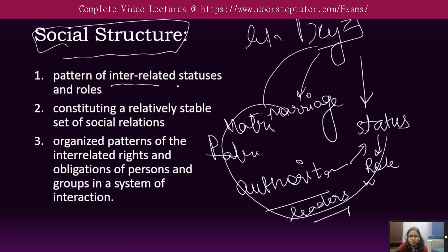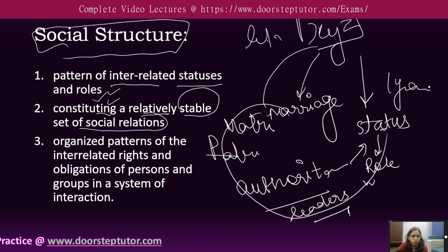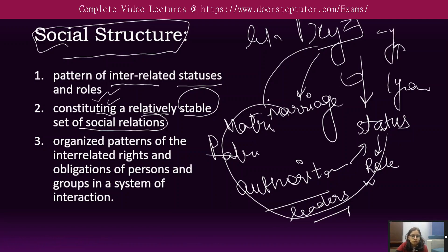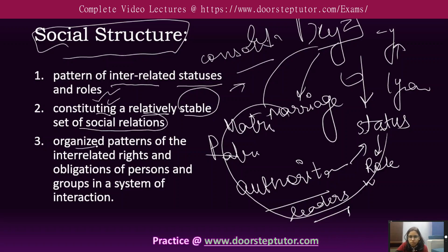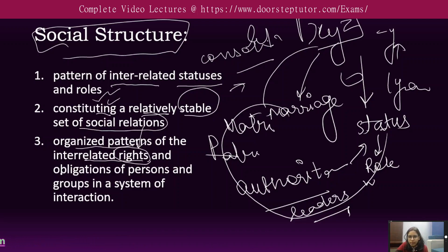Social structure is a pattern of interrelated statuses and roles, constituting a relatively stable set of social relations, because these sets do not change in one or two years — they run generation by generation and get consolidated and stable in any society. They are organized patterns of interrelated rights, because every status and every role also gives you some rights as well as responsibilities and obligations of persons and groups in a system of interactions.